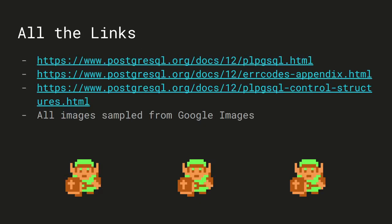Here are all the links. There's the PL/pgSQL documentation — I'd very much suggest you go and read it, especially the first link, because it gives a very broad overview of how PL/pgSQL parses queries, how the language works in the background, how to call things, how these statements work, and caching. The second link is the list of all the error codes — there are around 200 or so. The third link is a page with an explanation of all the control structures shown today. If you have any questions at all, I'm open for them now.